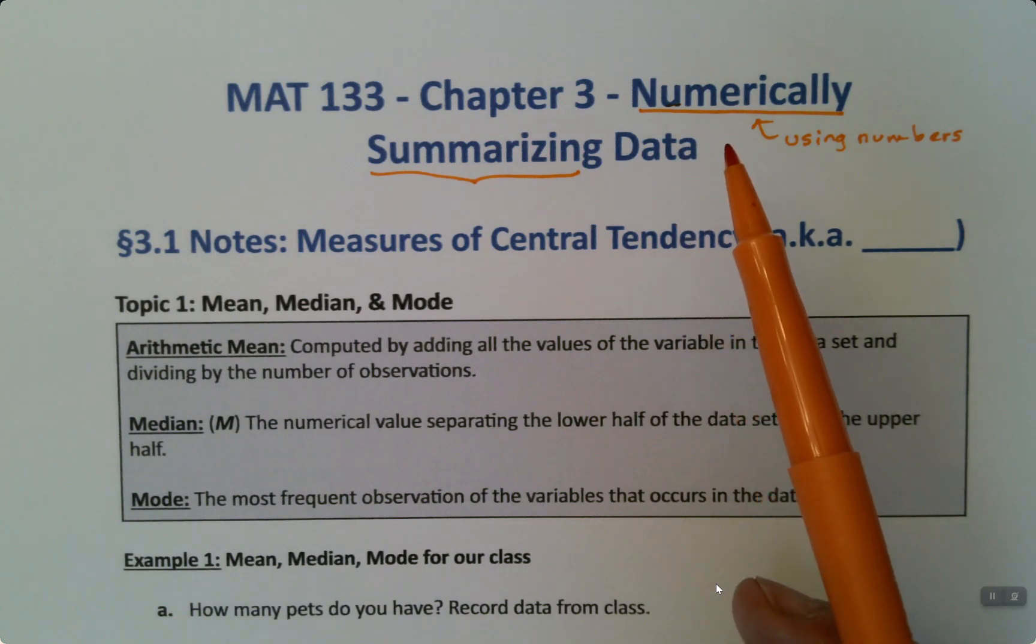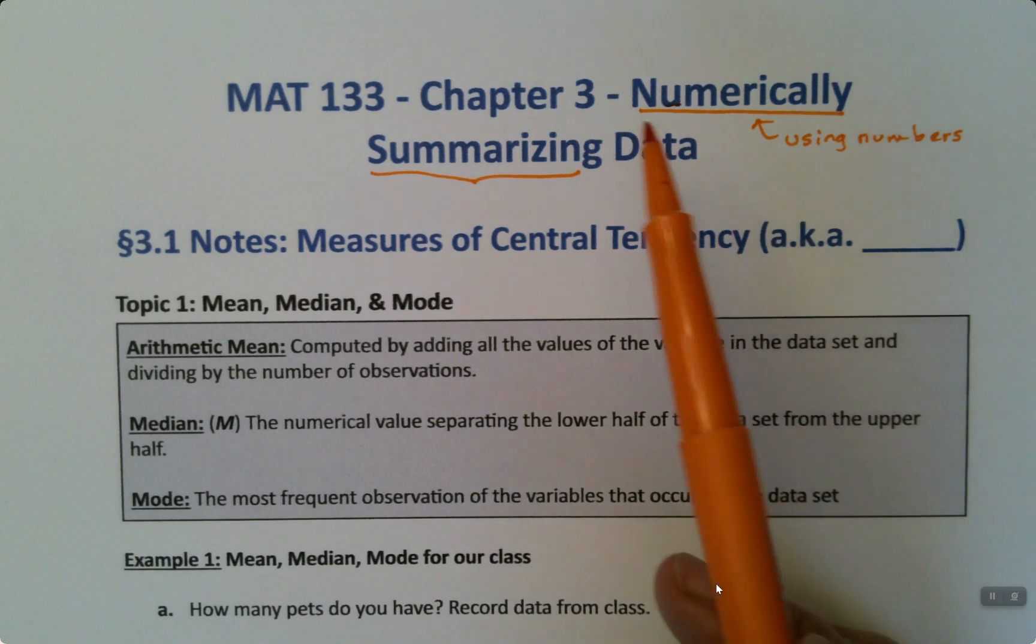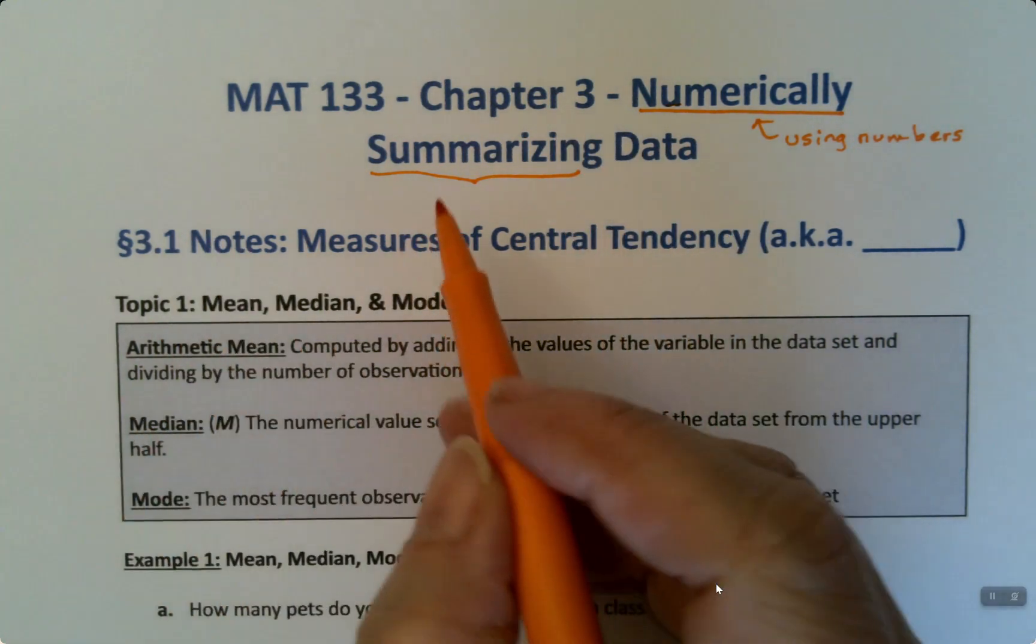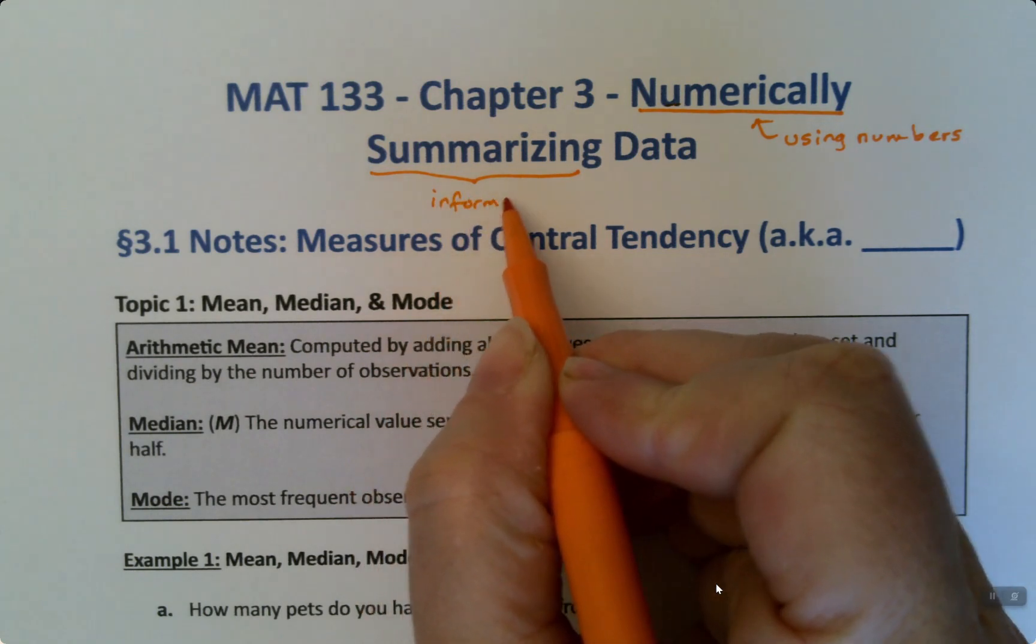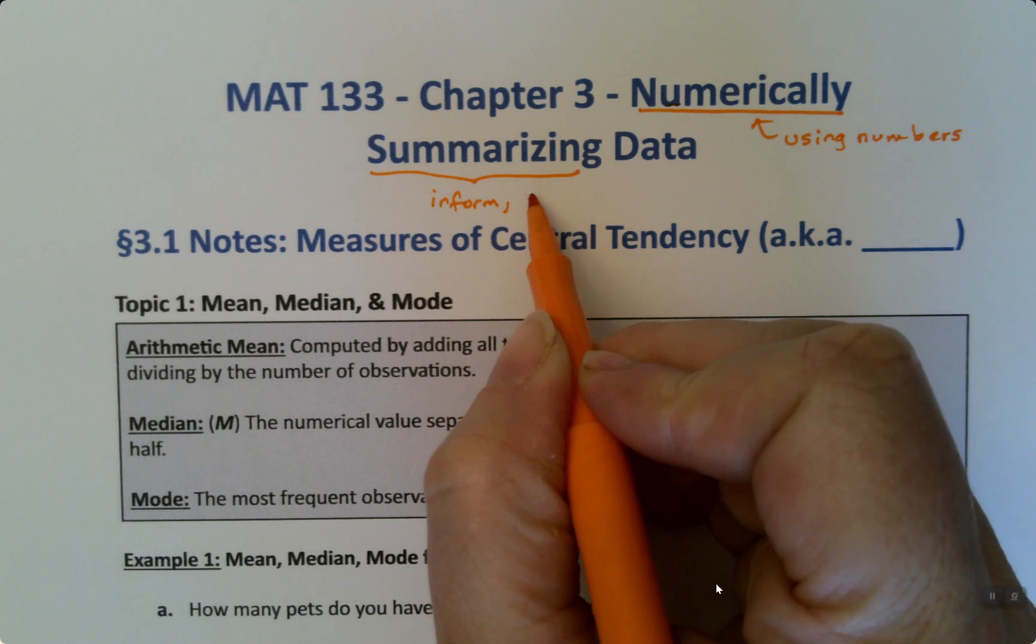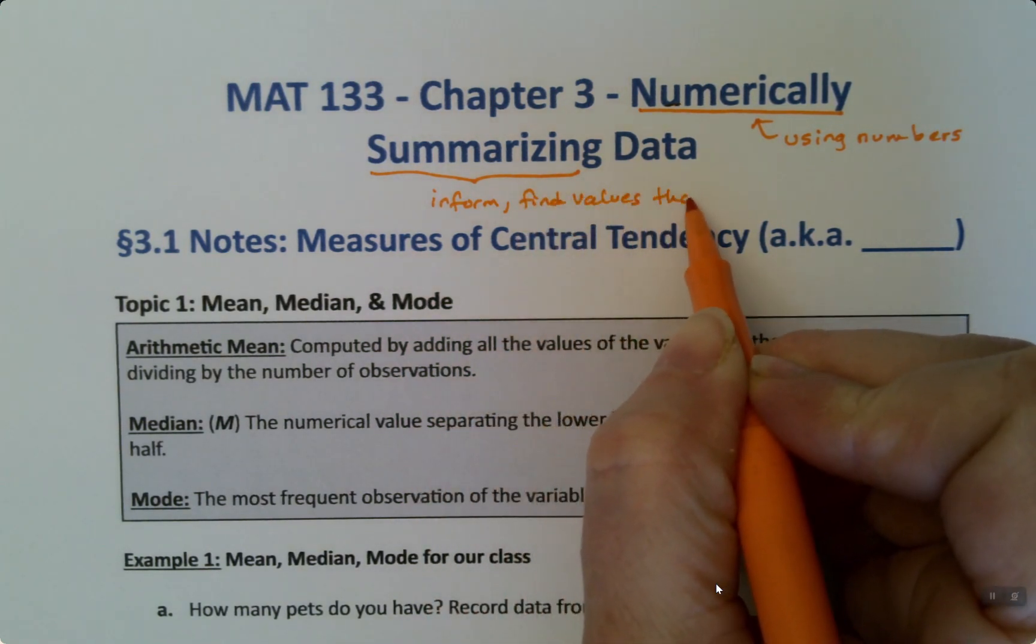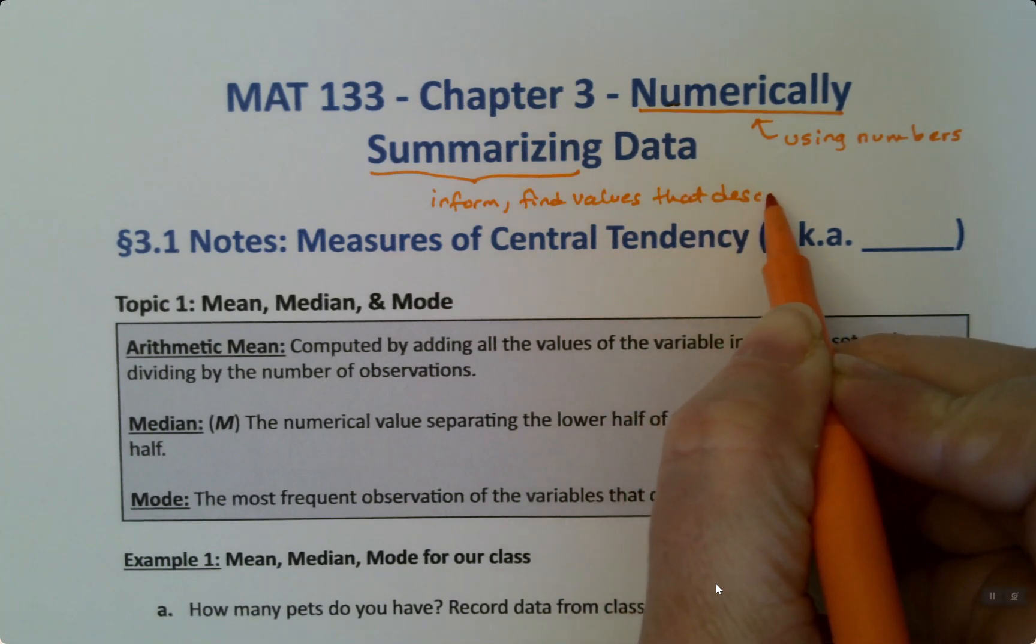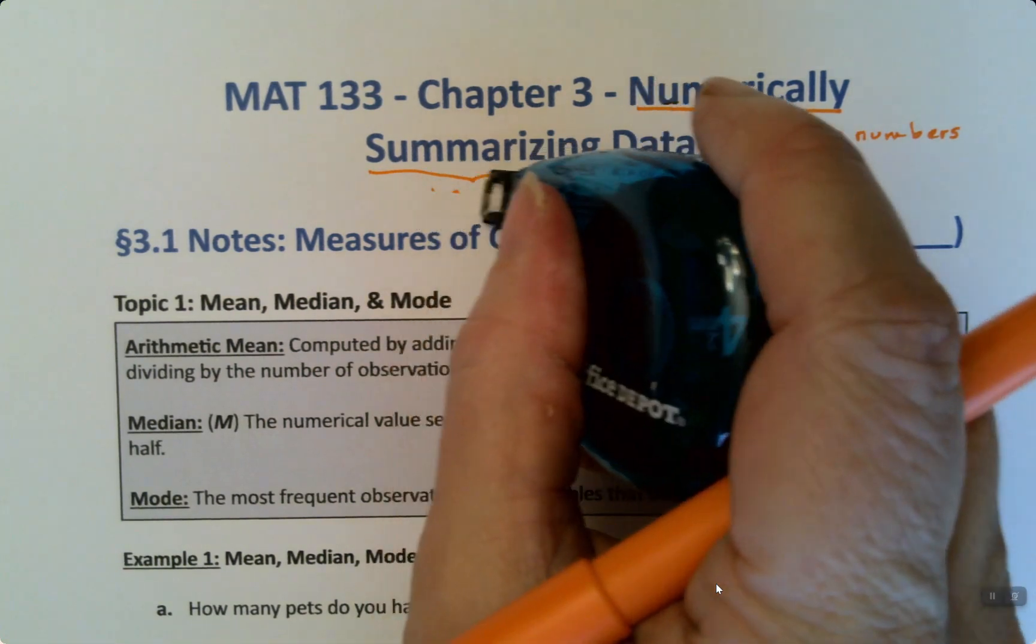In Chapter 3, we're going to numerically summarize data. Numerically is pretty easy - it means we're going to use numbers. And we're going to summarize our data. So that means that we're going to find values that describe our data set. That's a better way to put it. We're going to find values that describe our data set.